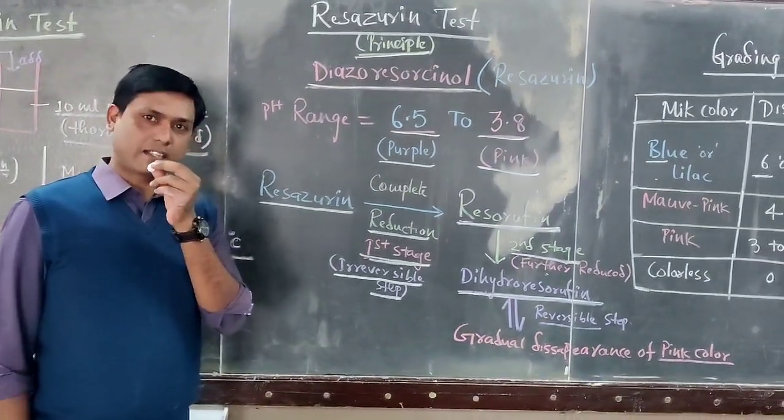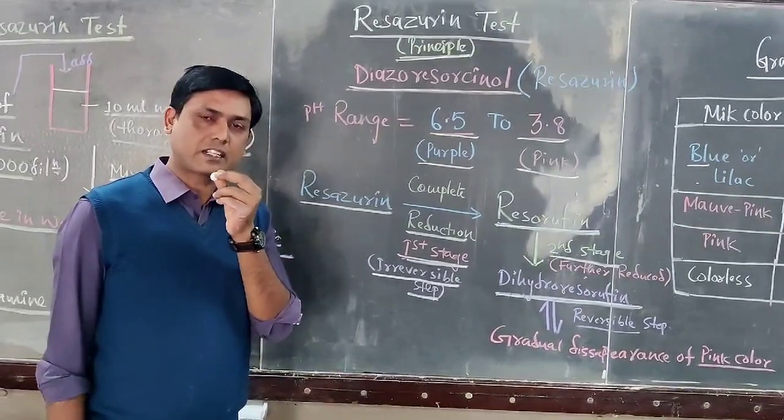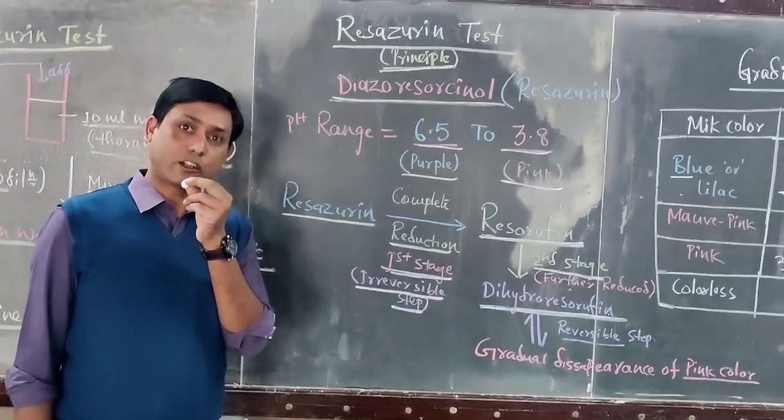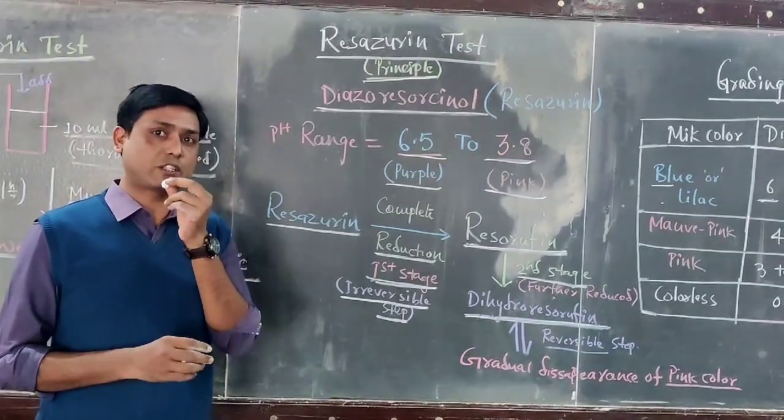Today we will discuss the resazurin test. There is a test called methylene blue reduction test for grading milk, but it takes a longer time. That is why we use a one-hour test called the resazurin test.